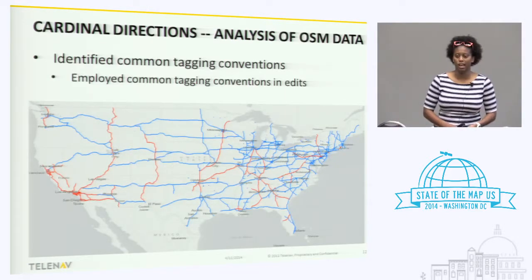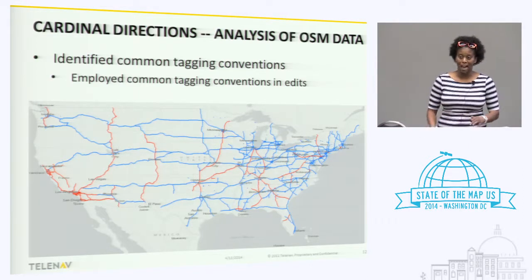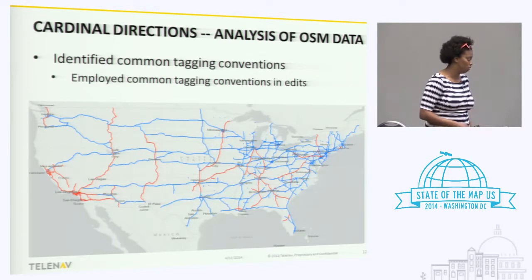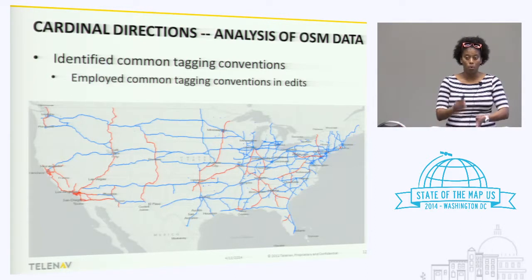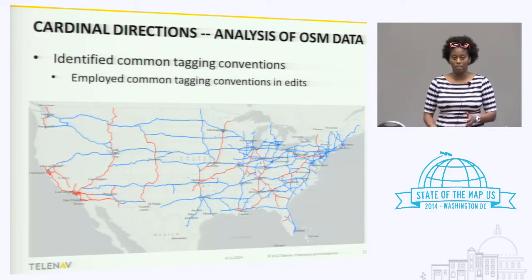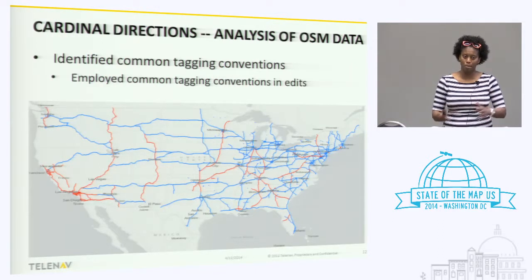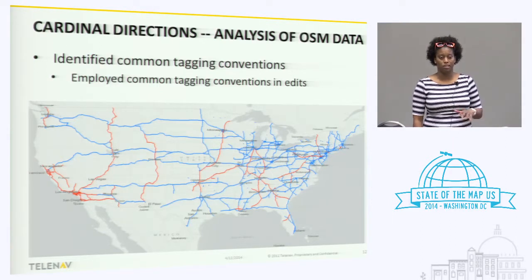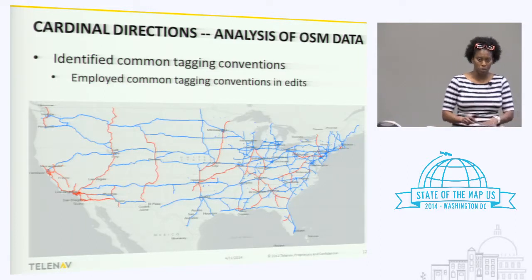So we needed to take a look at the distribution of the data and how the data is being tagged. We identified two different methods in updating the cardinal directions: one method would be to update the member roles of the highway route relations, or to add a direction tag to the highway route relations. This is what we found in our analysis.